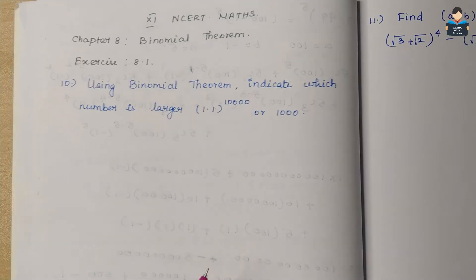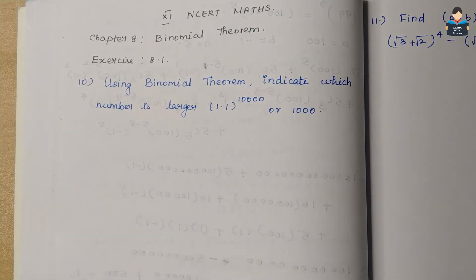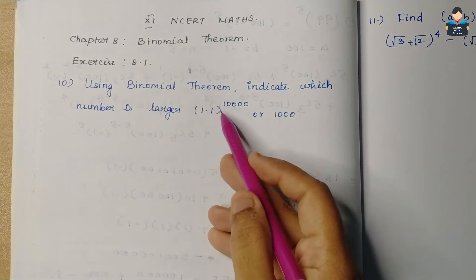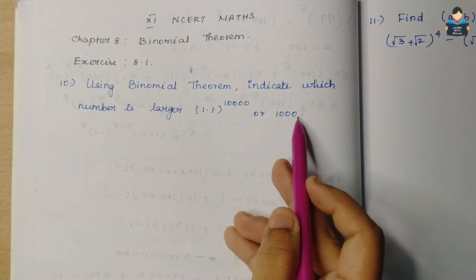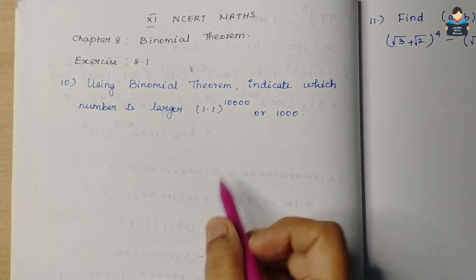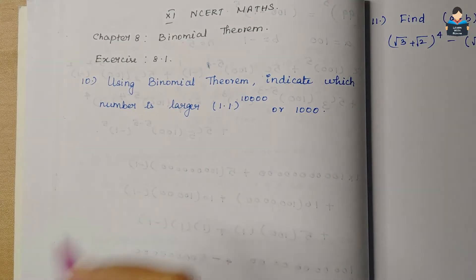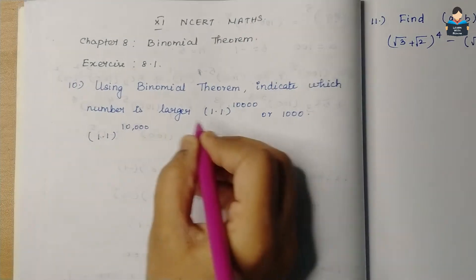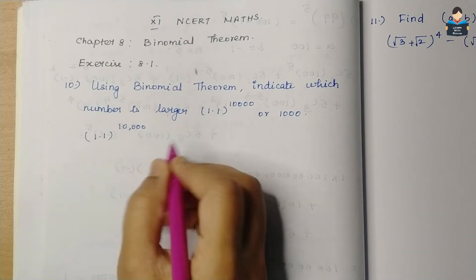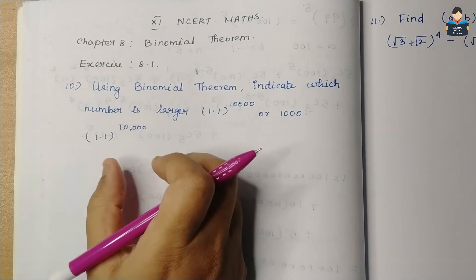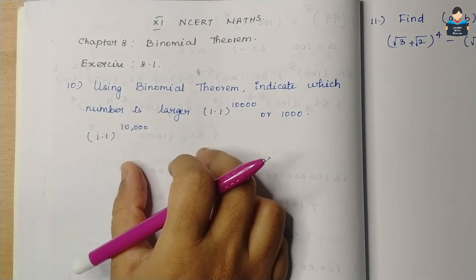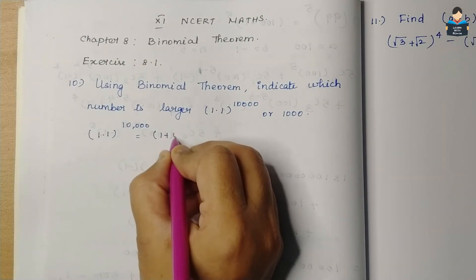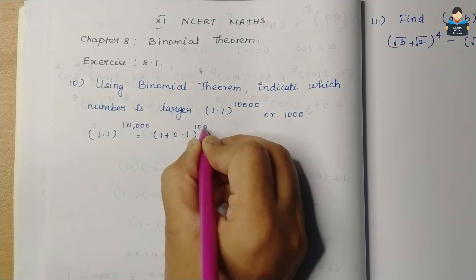Using the binomial theorem, indicate which number is larger. When you get two numbers — 1.1 to the whole power 10,000 — which is the larger number? So this number is of the form (a + b)^n, and we will use the binomial theorem.